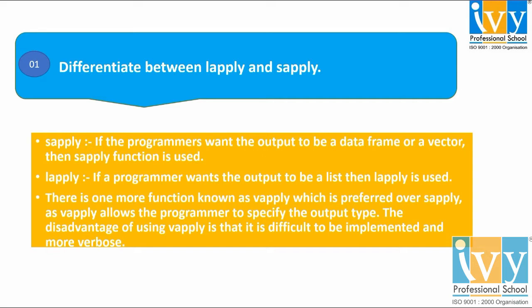There is also a function called VApply, which is preferred over SApply because VApply allows the programmer to specify the output type. The disadvantage of using VApply is that it is more difficult to implement and is more verbose.